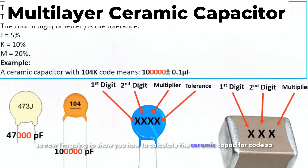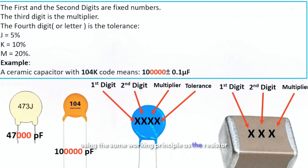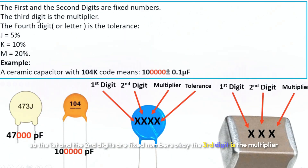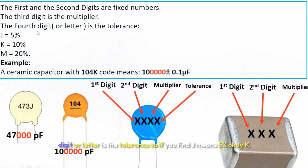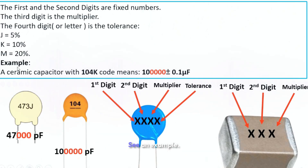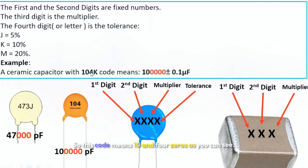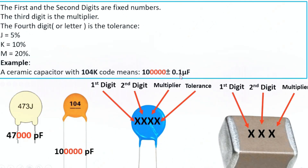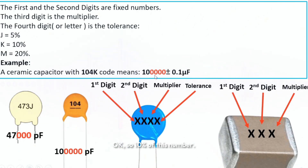Now I'm going to show you how to read the ceramic capacitor code, using the same working principle as resistors. The first and second digits are fixed numbers, and the third digit is the multiplier. The fourth digit or letter is the tolerance: J means 5%, K means 10%, M means 20%. For example, a capacitor coded 104K means 10 followed by four zeros, giving 100,000 picofarad, or 0.1 microfarad, with K indicating ±10% tolerance.